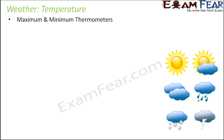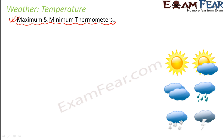To measure environmental temperature, we use a device called the maximum and minimum thermometer. These are special thermometers designed to measure the temperature of the environment. We are all familiar with a thermometer — a glass tube with mercury inside and a graduated scale. When placed on the body, it tells the body temperature. That is the clinical thermometer, which we use when we fall ill with fever.